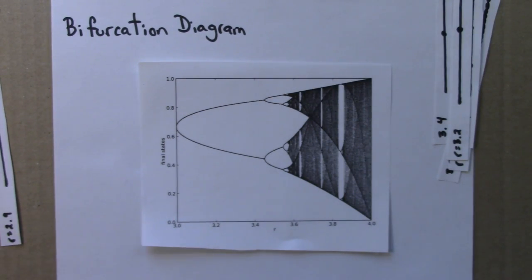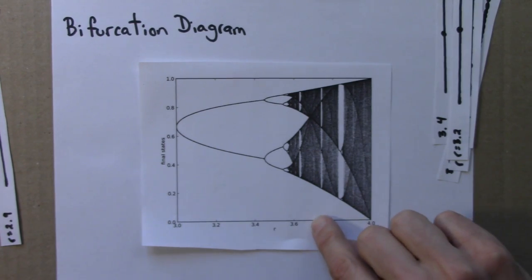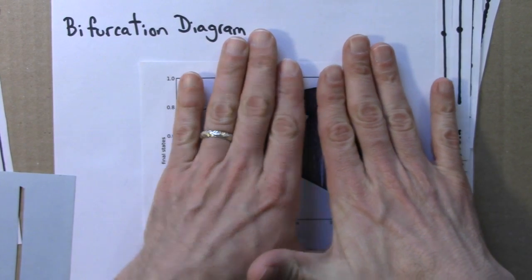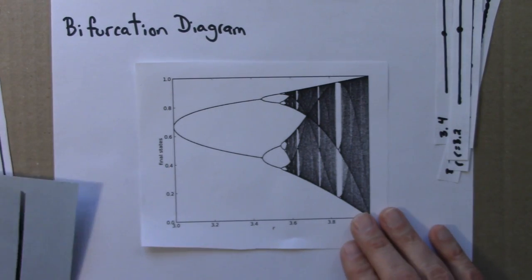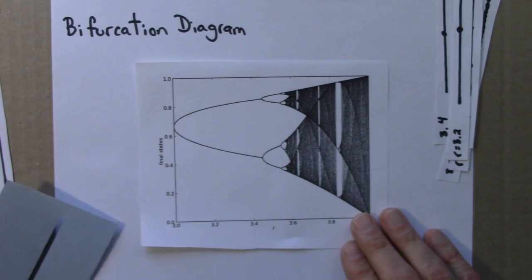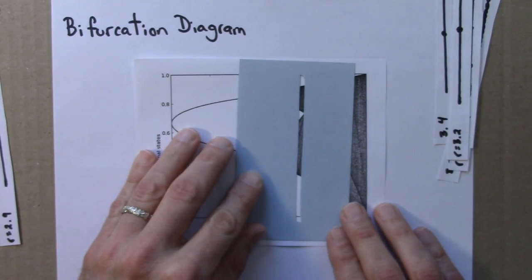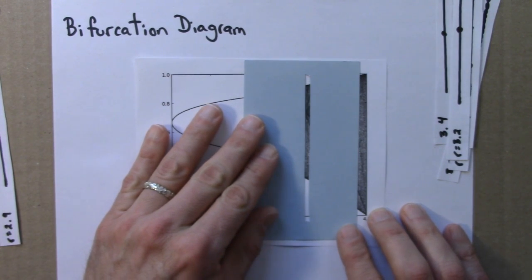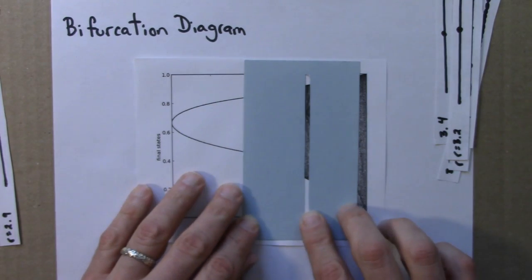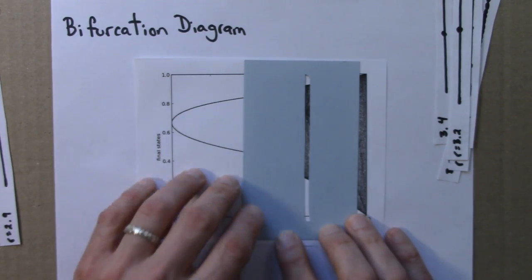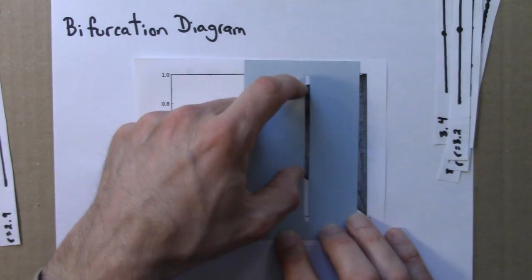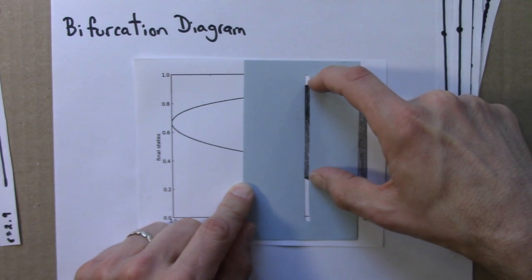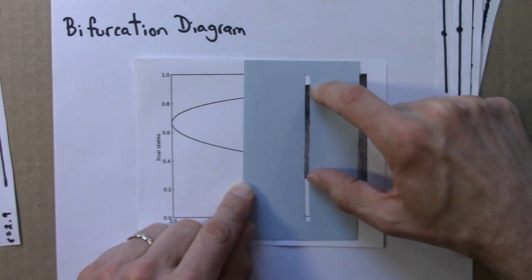So for example, if I wanted to know what's going on right around 3.7, I would just try to blot out everything except for 3.7 and then view it as a single final state diagram. Sort of imagine doing that with this thing that I've made. So this is, I've moved this so that the slit shows right around 3.7. And so we would say that, aha, this looks like an aperiodic region, lots and lots of dots. So it must be aperiodic going between this value and this value.